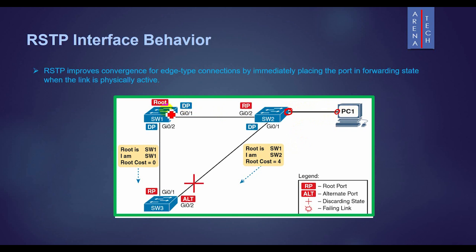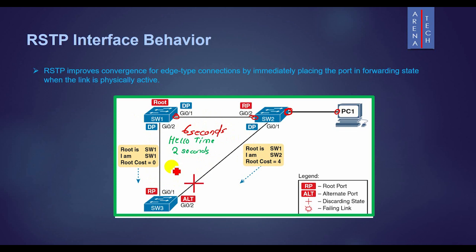RSTP also improves convergence over full-duplex links between switches. RSTP recognizes the loss of the path to the root bridge through the root port in six seconds, based on three times the hello timer value, which is two seconds. RSTP recognizes a lost path to the root bridge much more quickly. The main changes with RSTP can be seen when changes occur in the network.